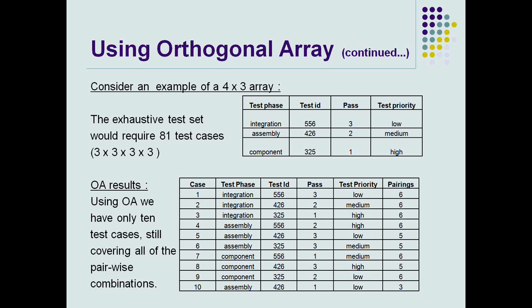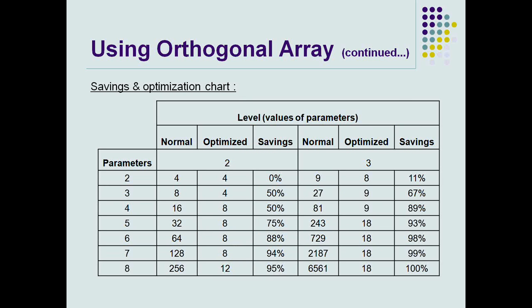If you are able to open the OA results in an Excel sheet, you will better understand, because the pairing details are shown below the Excel sheet, which I'm not able to include in this slide currently. But if you open the output file in Excel, you will be able to see the combinations clearly.